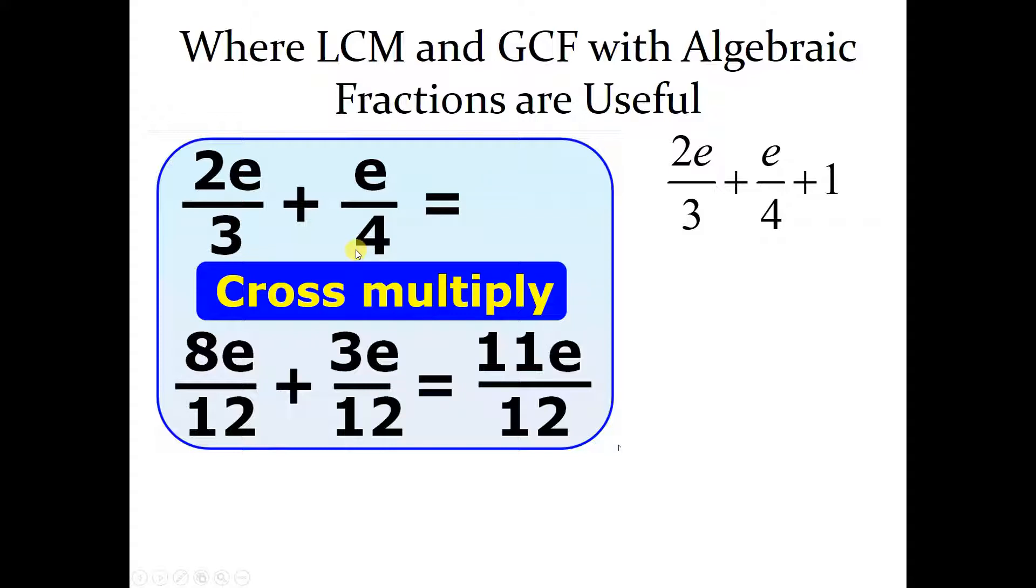Three and four, they're relatively prime. There's nothing that they share, there's no factors they share other than one, so their lowest common multiple is their product. That's why you're multiplying these two together.